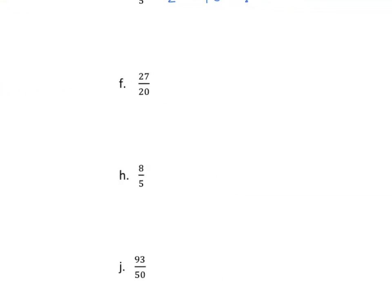Navigating across, we see we have 20 as our denominator again, so we know we're going to multiply by 5 fifths. We have 27 times 5, which is 135, and 20 times 5 is 100. In this case, we have a numerator greater than the denominator, so we know that gives us an equivalent greater than 1. We could change this to a mixed number, and that would be 1.35, or 1 and 35 hundredths.